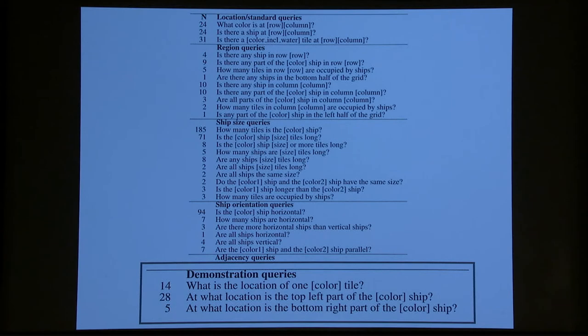There's questions about orientation and whether ships touch that people came up with, and also demonstration questions, which are especially powerful. And here's a really good question that surprised us as the experimenters. We didn't think of it before we ran this experiment. At what location is the top left part of the purple ship, for instance? It's a great question. It gives you a tile, because the answer is a particular tile that is going to be purple. And it gives you some geometry about where the rest of the ship is, and it tells you immediately where to start clicking afterwards. So it's a great question, and some participants were clever enough to come up with this.